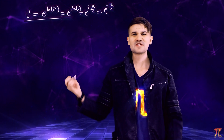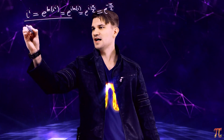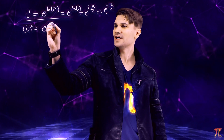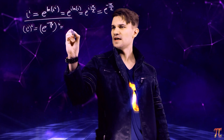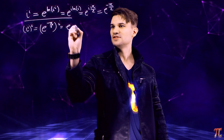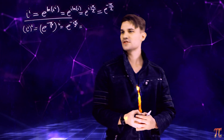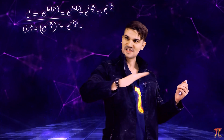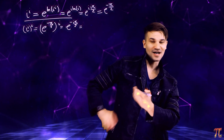But what happens if we do it again? I mean, if something feels good, we should always do it again. So let's see: i to the i to the i. Well, we know i to the i to be e to the negative pi over 2, right? So what we're asking for is e to the negative i pi over 2. And by Euler's equation again, we know that this is the complex number of absolute value 1 that makes an angle of negative pi over 2 with the positive real axis, which is negative i.